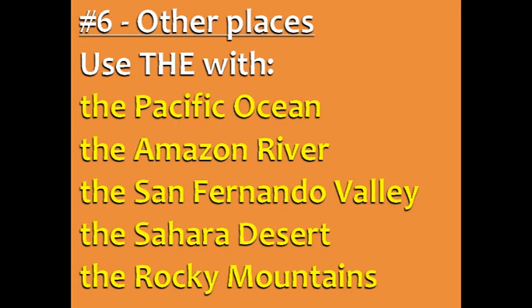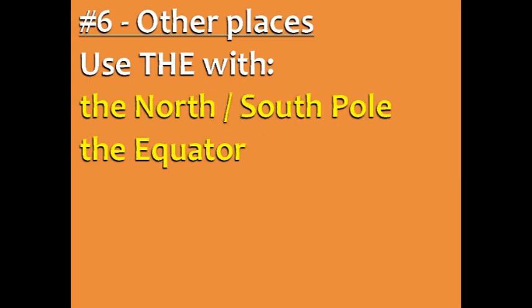Use 'the' with oceans, rivers, valleys, deserts, and mountain ranges — that's groups of mountains. For example: the Pacific Ocean, the Amazon River, the San Fernando Valley, the Sahara Desert, and the Rocky Mountains. Also use 'the' with specific points on the globe, like the North Pole, the South Pole, and the equator.